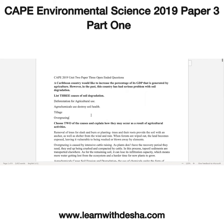The next part asks us to choose two causes and explain how they may occur as a result of agricultural activities. For deforestation in the Caribbean, farmers normally remove trees and vegetation to plant their agricultural crops — especially through slash and burn. Farmers also remove trees in the process of logging, to provide space for cultivation, and to provide fodder land for grazing and livestock.